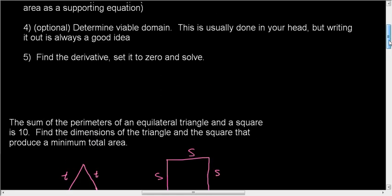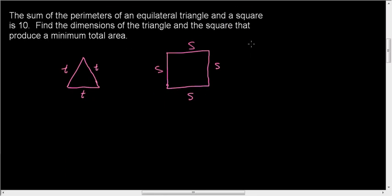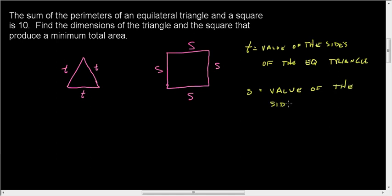Alright, so now if I go to my steps, step one: make a list of all variables. I'm going to let T be the value of the sides of the equilateral triangle. S is going to be the value of the sides of the square. P I'm going to let be my perimeter, my total perimeter. And I'm going to let A be my total area.